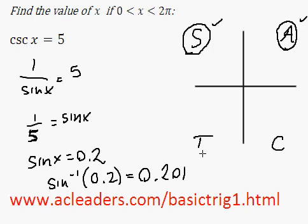Of course, if I had the calculator in degrees, in degree mode, the answer would be 11.53 degrees. But we're not interested in that, because I want an answer in radians. So, we already have the first answer in the first quadrant, which is 0.201.